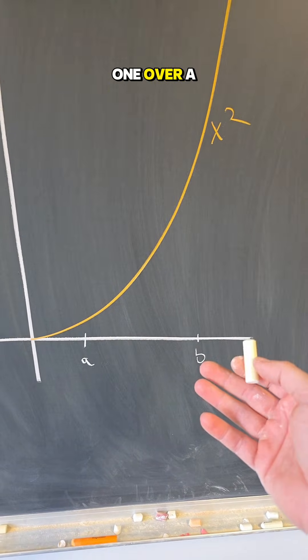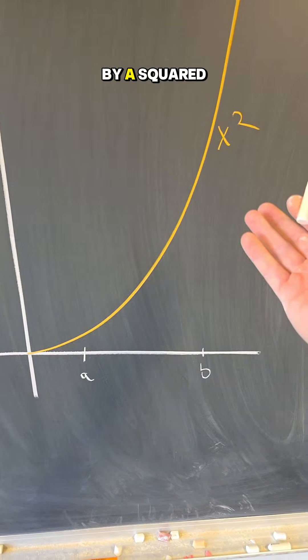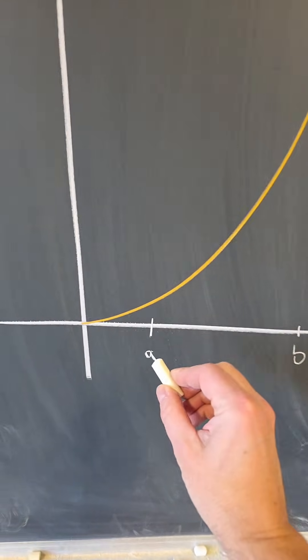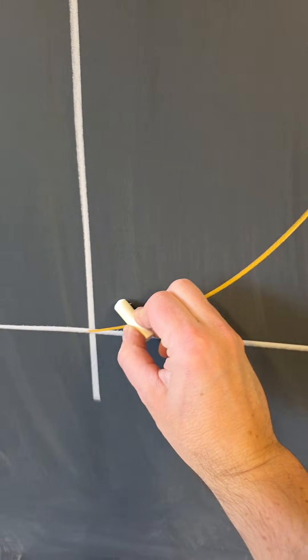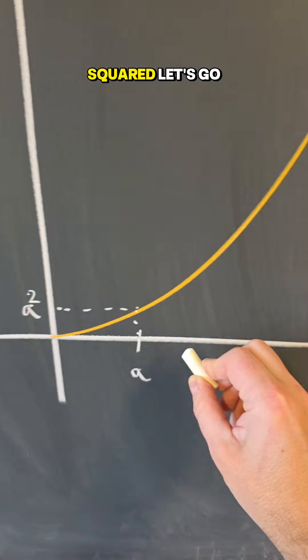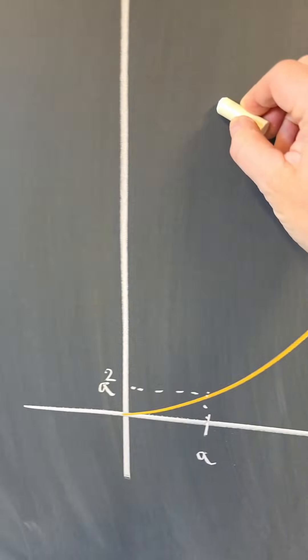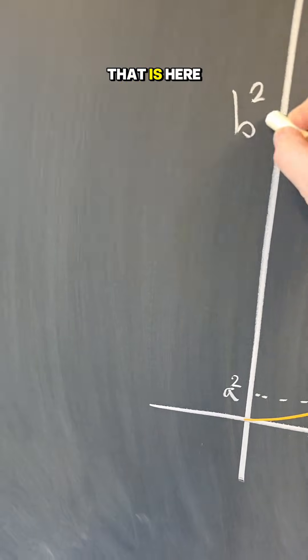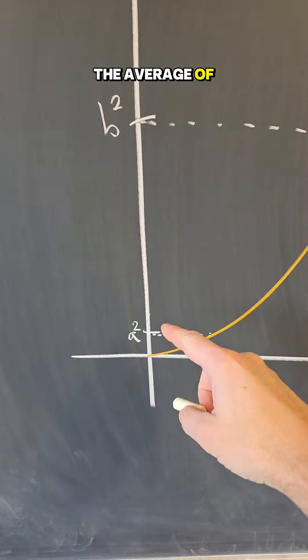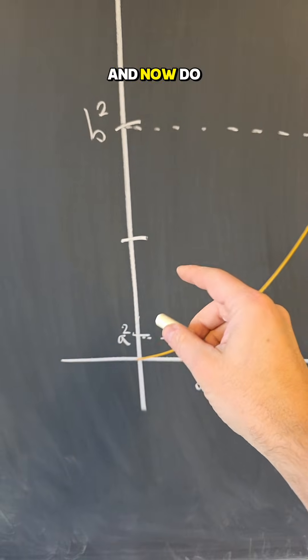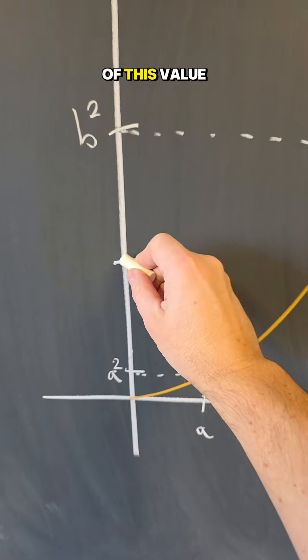Now let's replace 1 over A by A squared, so by squaring. What happens in this case? Now let's take A squared. This is A squared. Let's go and find B squared that is here. So the average of A squared and B squared will land somewhere here, and now do the square root of this value.